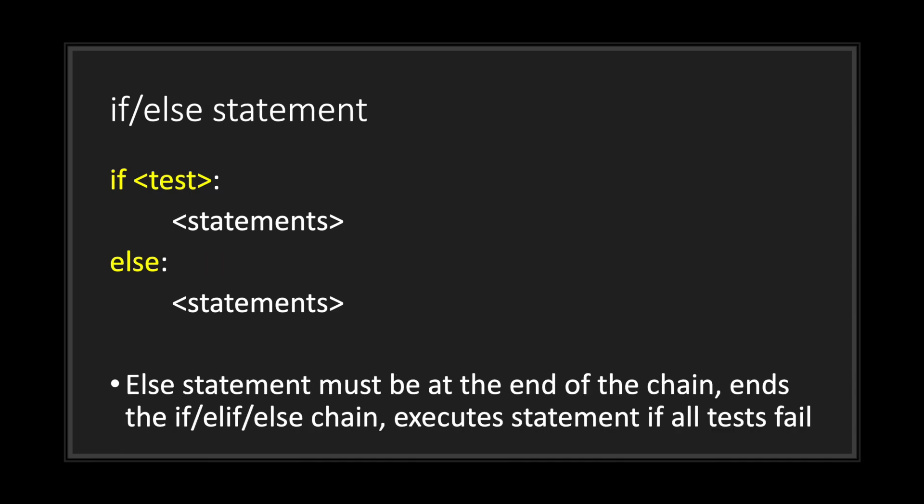Let's take a look at an if-else statement chain. One thing to note is that the else statement must be at the end of the chain. The else statement ends the if-else-if-else chain and executes its block if all tests fail. If the if test is true, we execute everything in the if statement block and exit the chain. However, if the if test is false, we immediately move on to the else statement block and execute the code there.